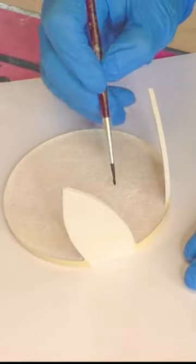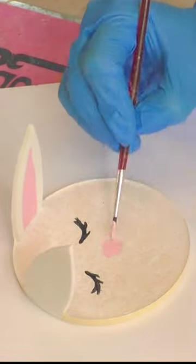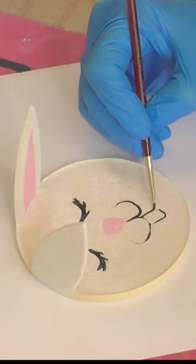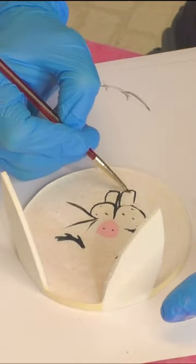Then I took acrylic paint and did the eyes with some eyelashes, the nose, the mouth, some buck teeth and whiskers. I gave the teeth a little extra whitening.